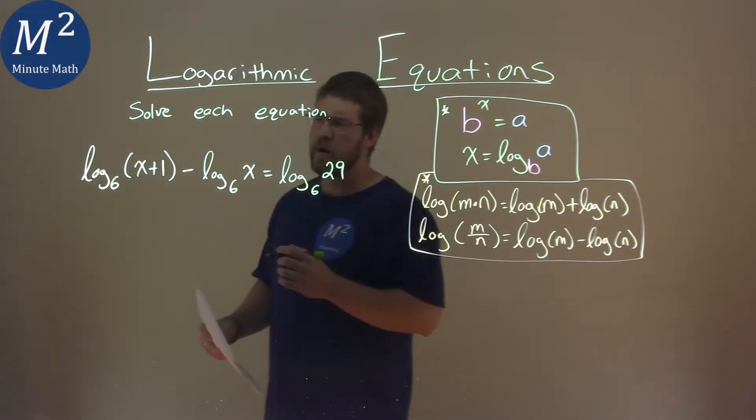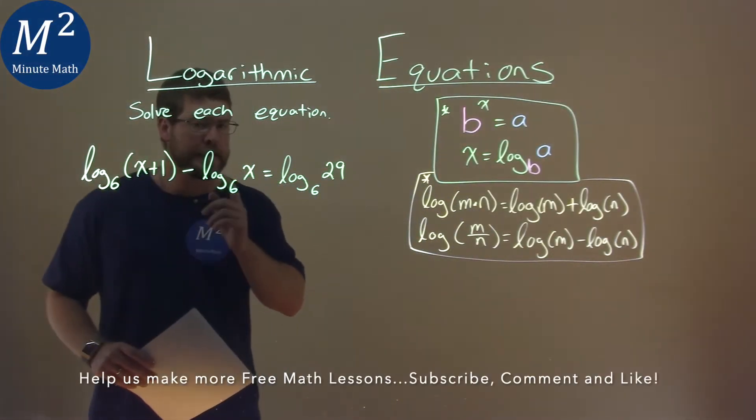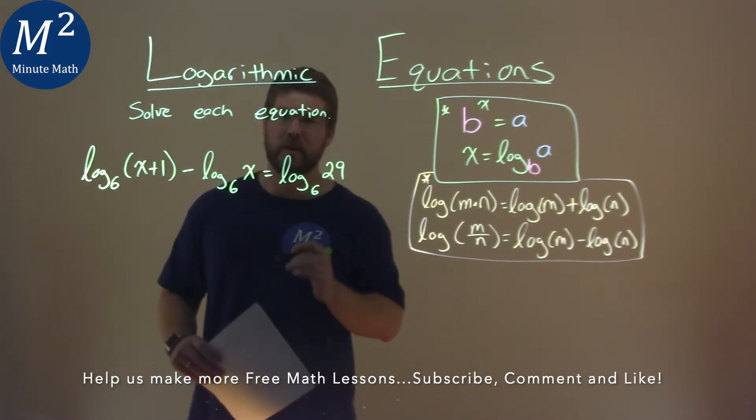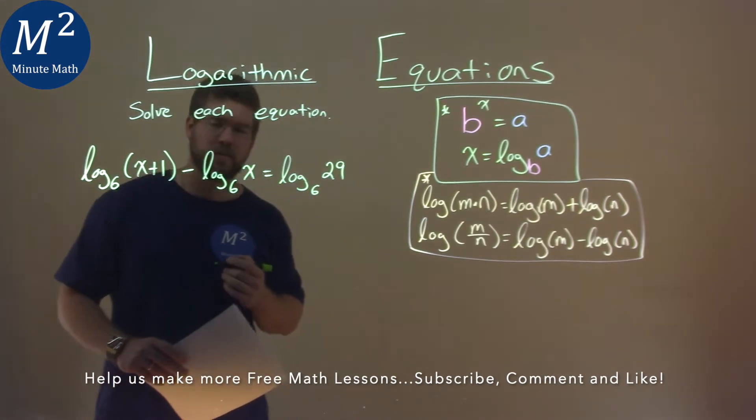We're given this problem right here. Log base 6 of x plus 1 minus log base 6 of x is equal to log base 6 of 29 and we're going to solve this equation.